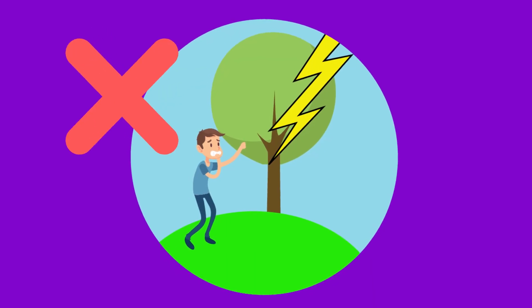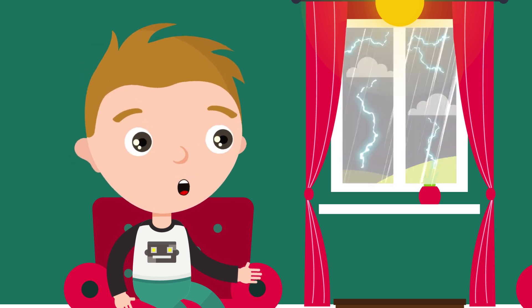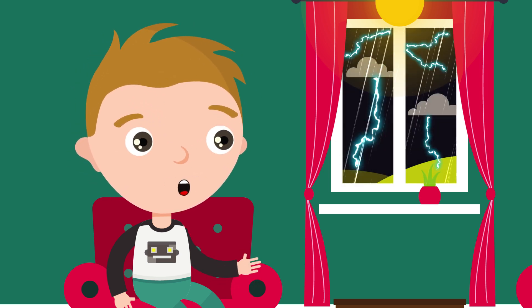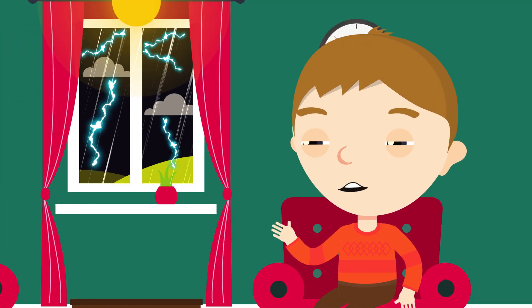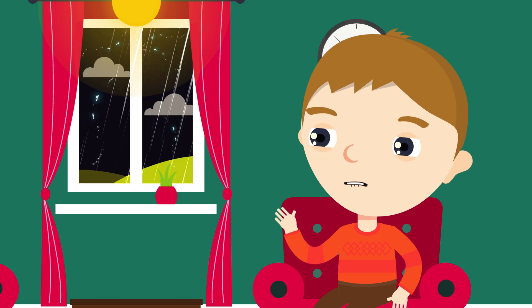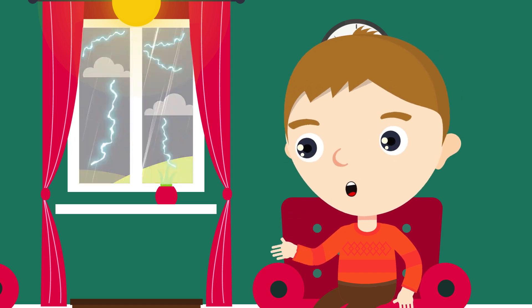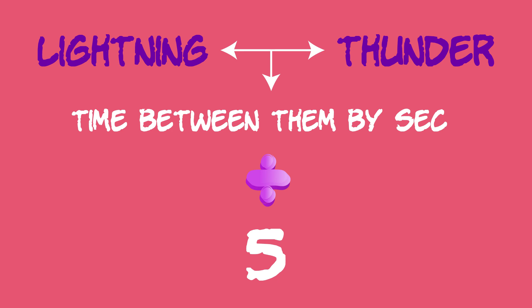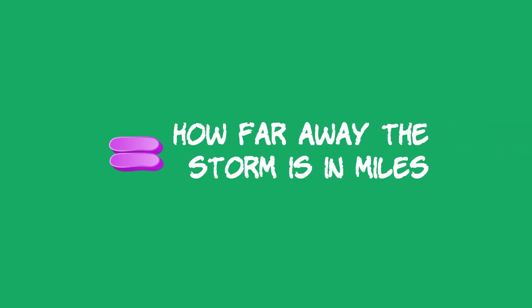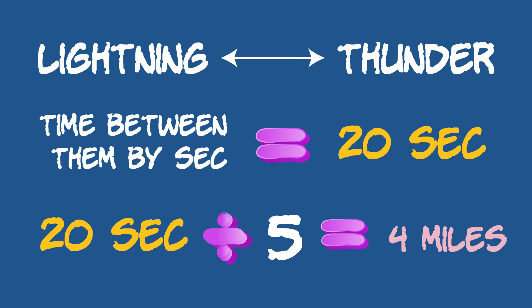And definitely don't stand beside a tree. Did you know that you can use thunder to tell how far away a storm is? Next time you see lightning, count the number of seconds between when you see the lightning and hear the thunder. Take the number of seconds and divide by five, and that will tell you how far away the storm is in miles. For example, if you counted 20 seconds between the lightning and the thunder, the lightning is four miles away.